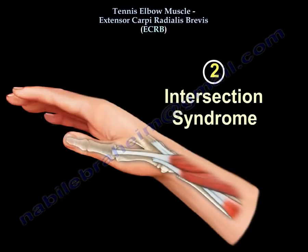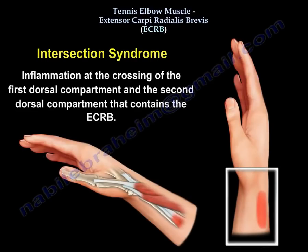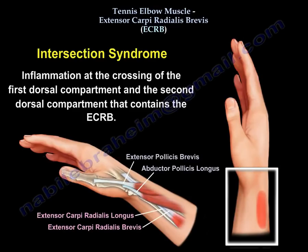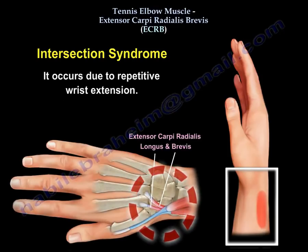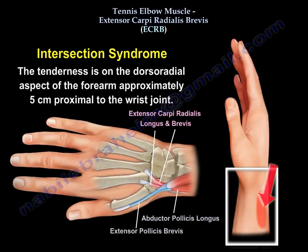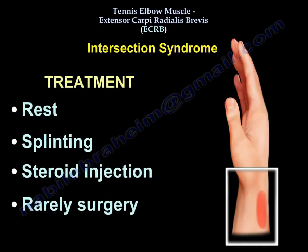Another entity the muscle is involved with is called intersection syndrome. Intersection syndrome is inflammation at the crossing of the first dorsal compartment and the second dorsal compartment that contains extensor carboidialis previs. It occurs from repetitive wrist extension, with tenderness on the dorsal radial aspect of the forearm approximately 5 cm proximal to the wrist joint, at the area of inflammation of the extensor carboidialis longus and previs at the intersect with the abductor pollicis longus and extensor pollicis previs. The condition is usually treated by rest, splinting, and rarely by surgery.